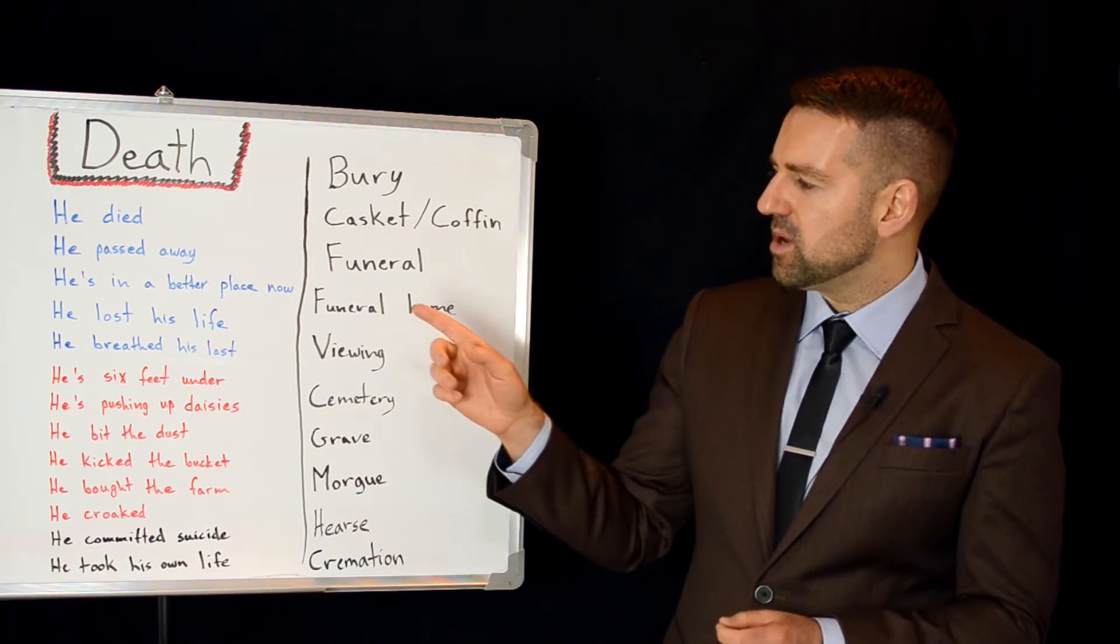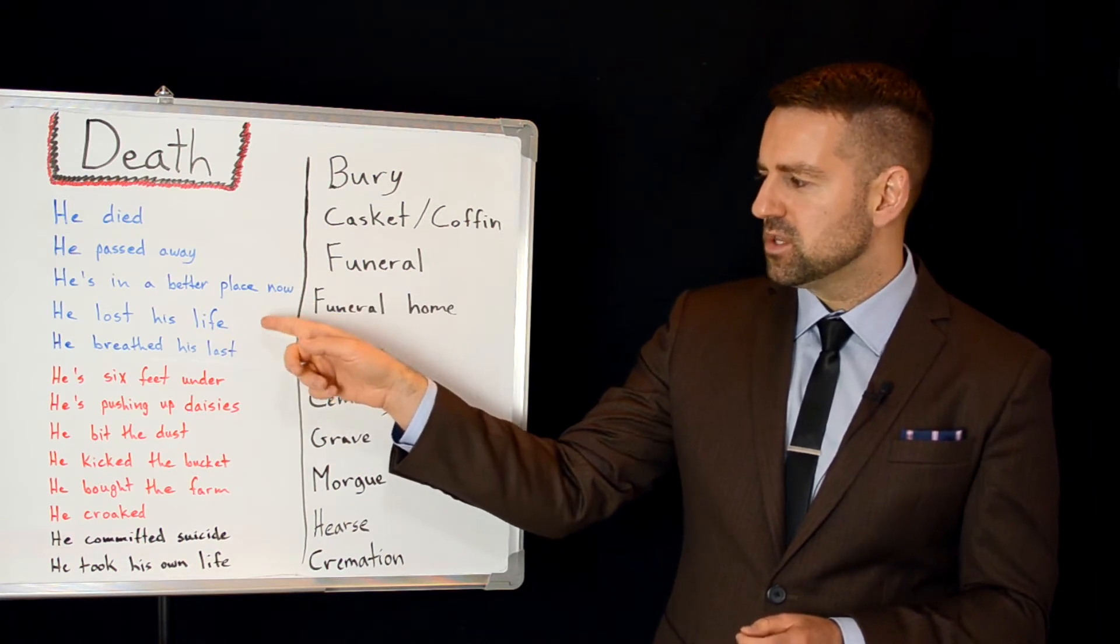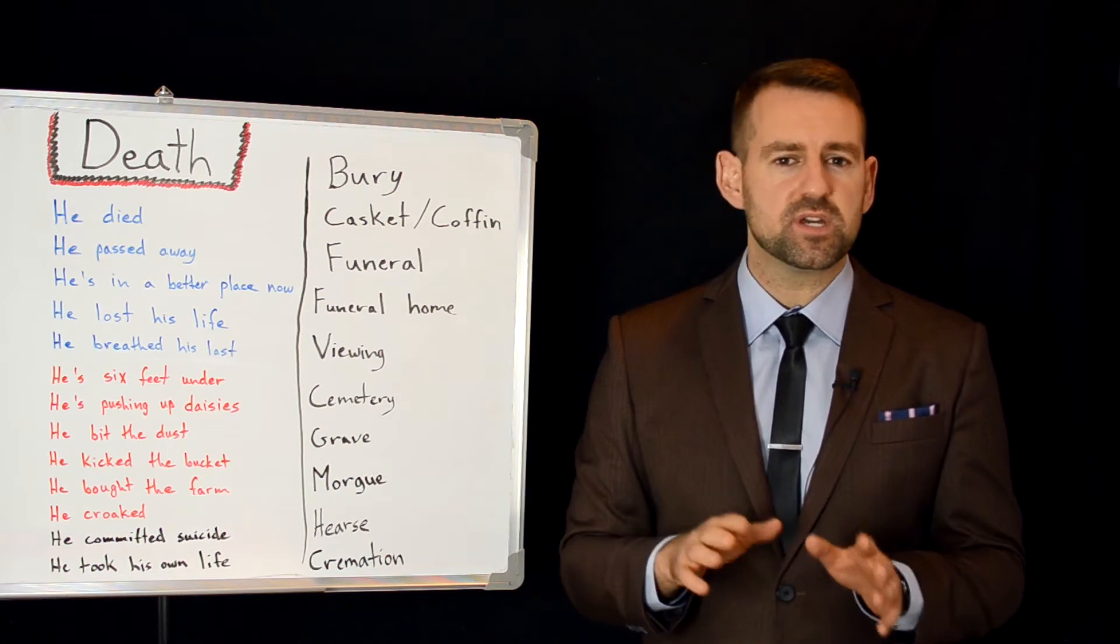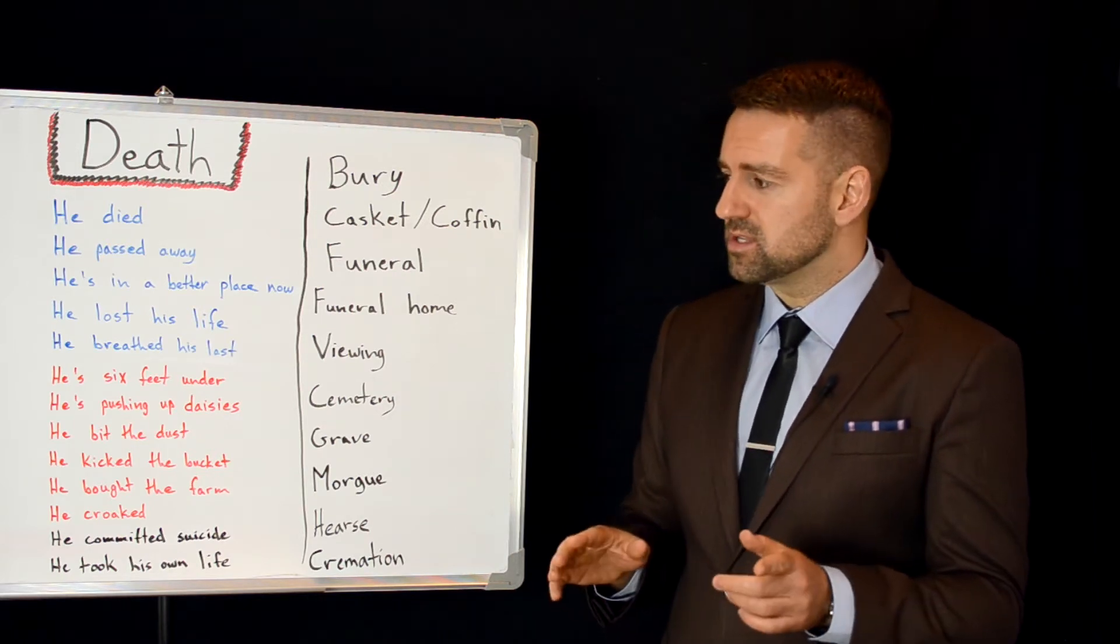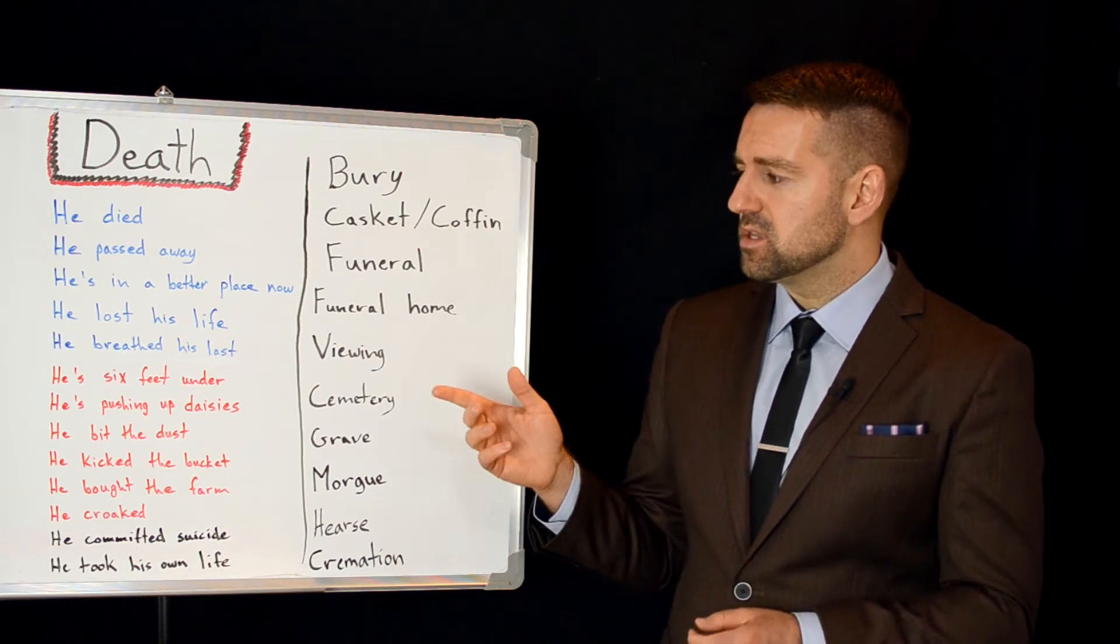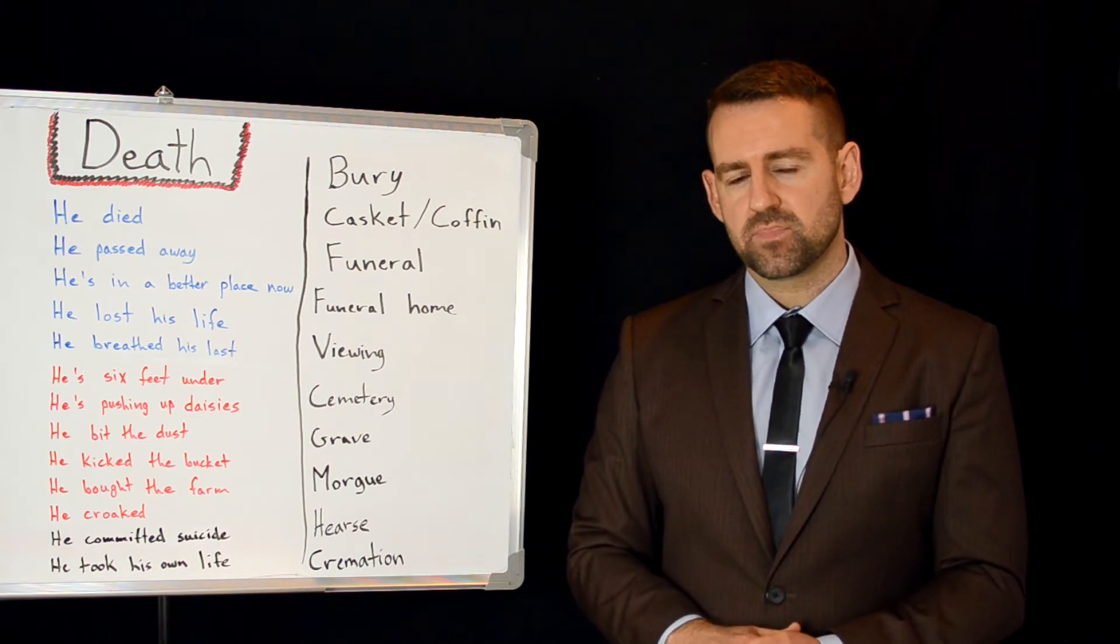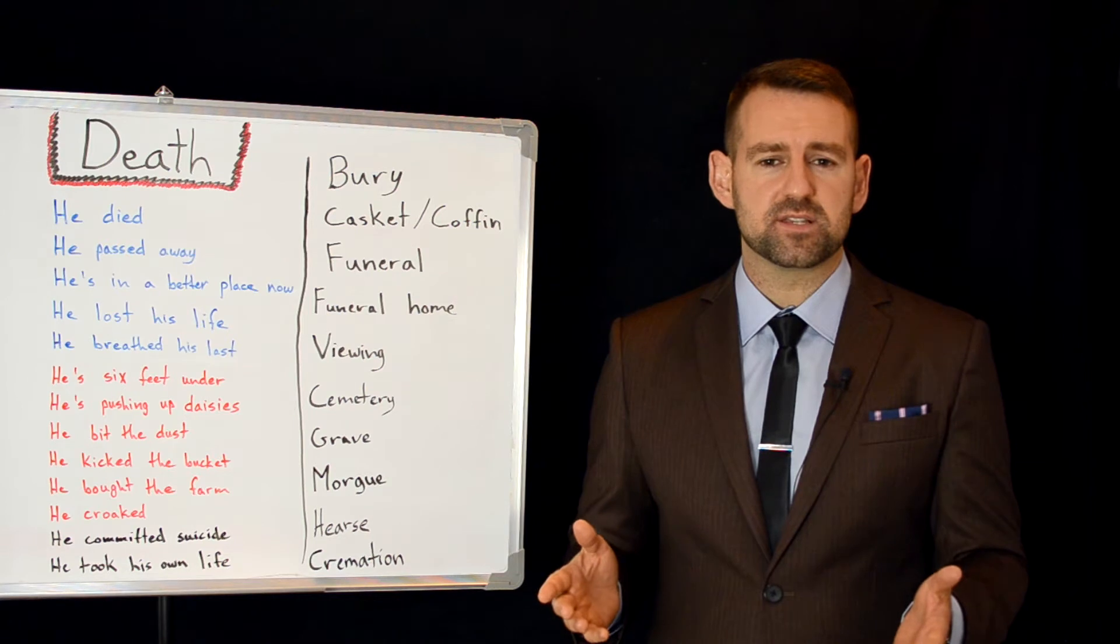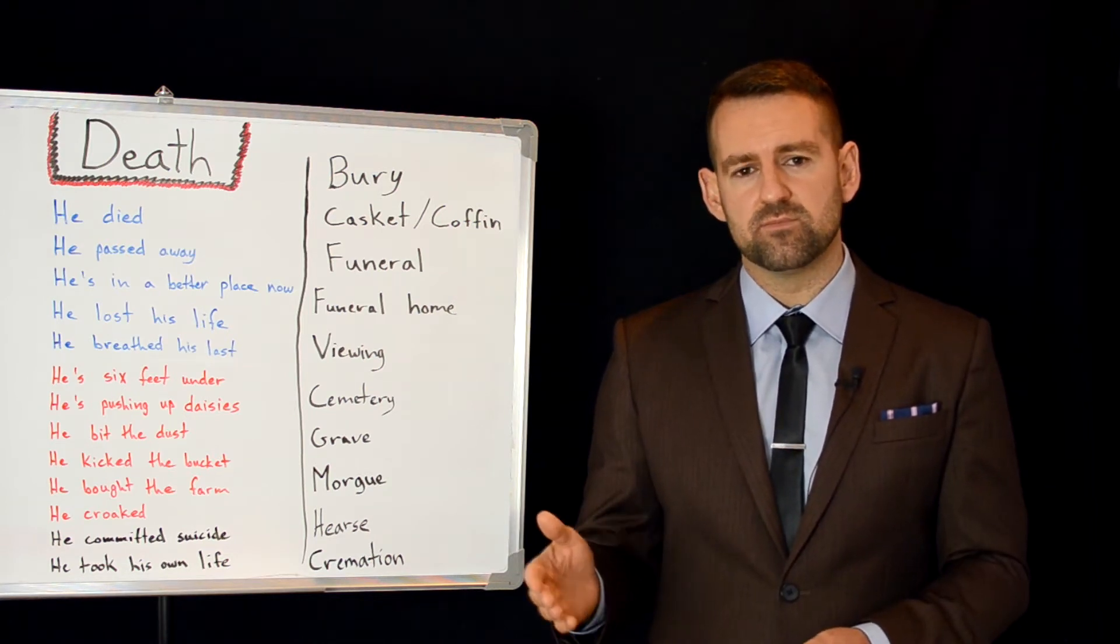Another way we can talk about it is, he lost his life. Usually we use this when the person who's died is young. So we could say, it's really unfortunate that he lost his life at such a young age, or it's too bad that he lost his life to cancer before seeing his grandchild born.